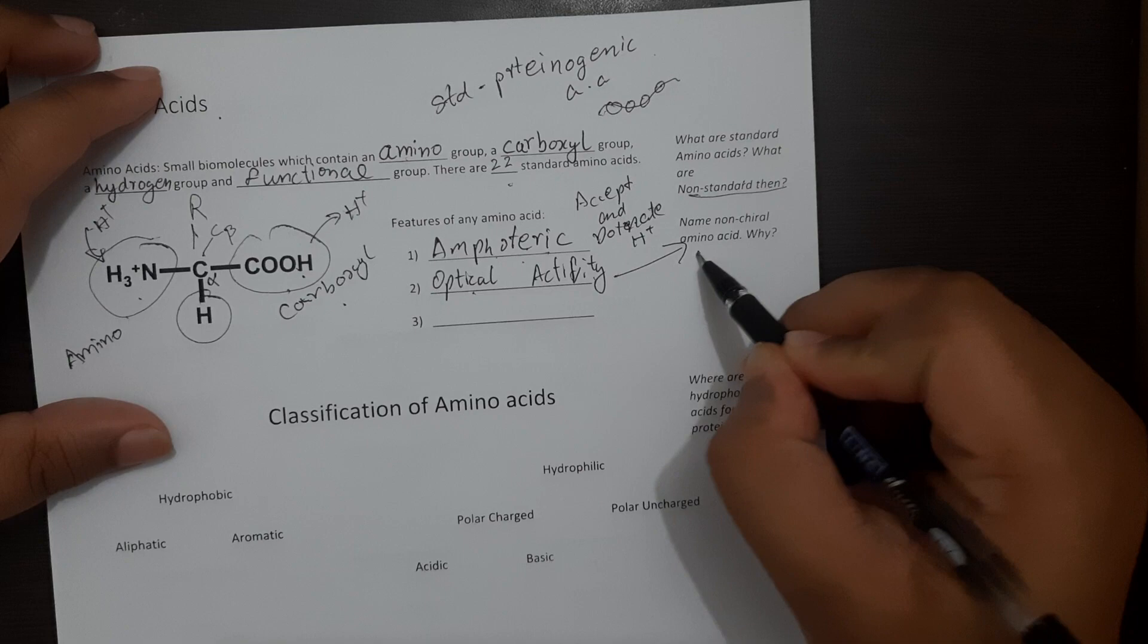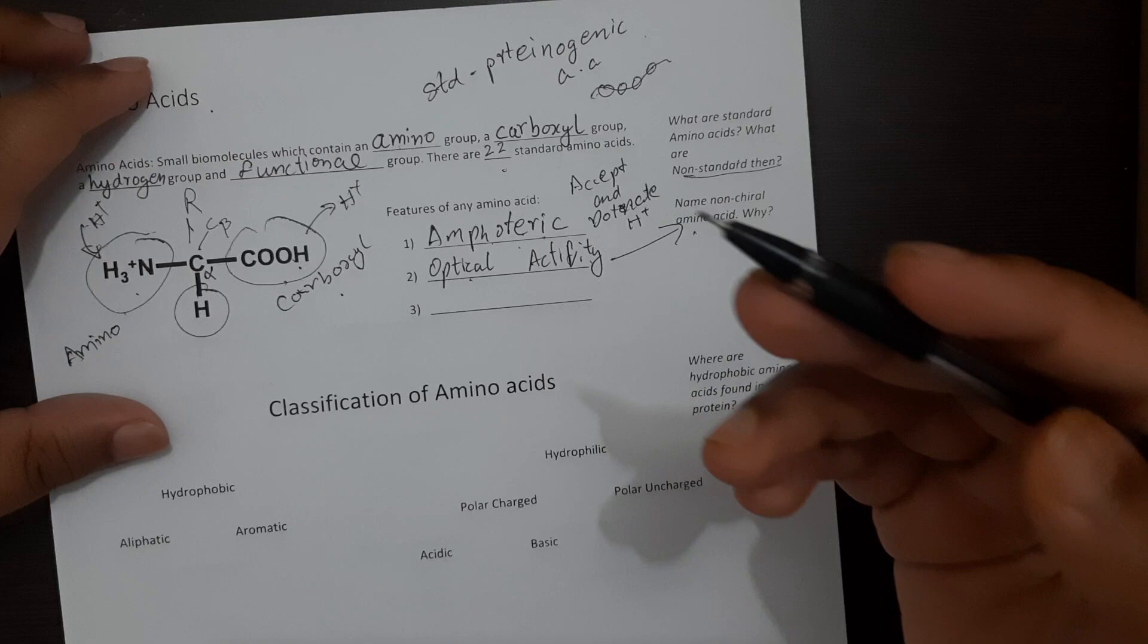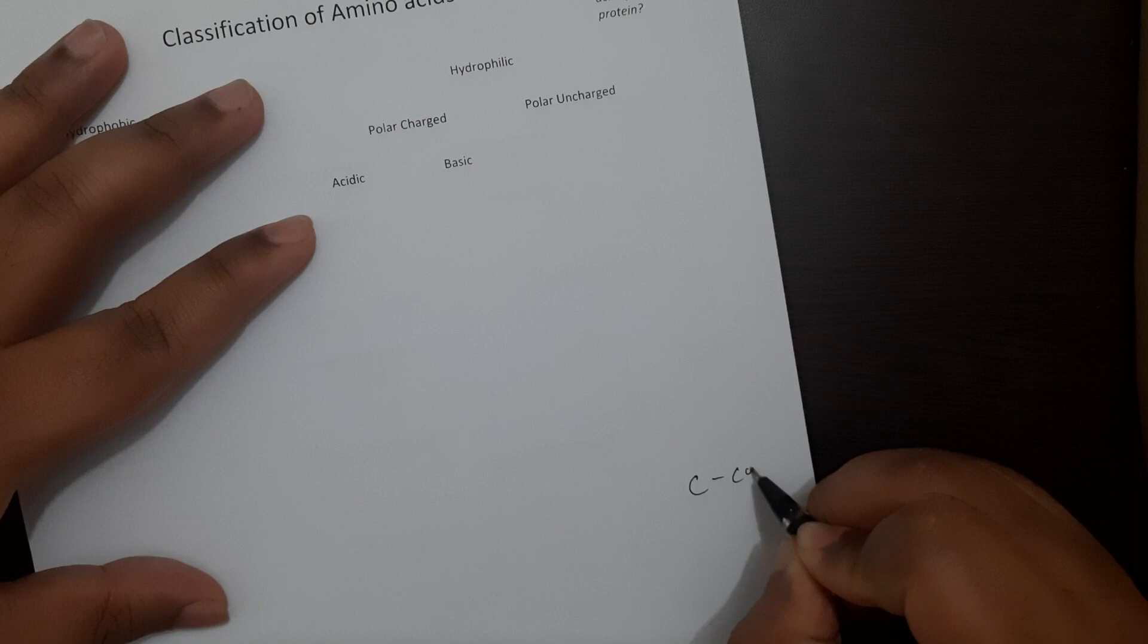Now there is an exception to this and the only amino acid which does not have the ability to change plane polarized light is glycine. The reason behind this is I'll take a quick example of it.